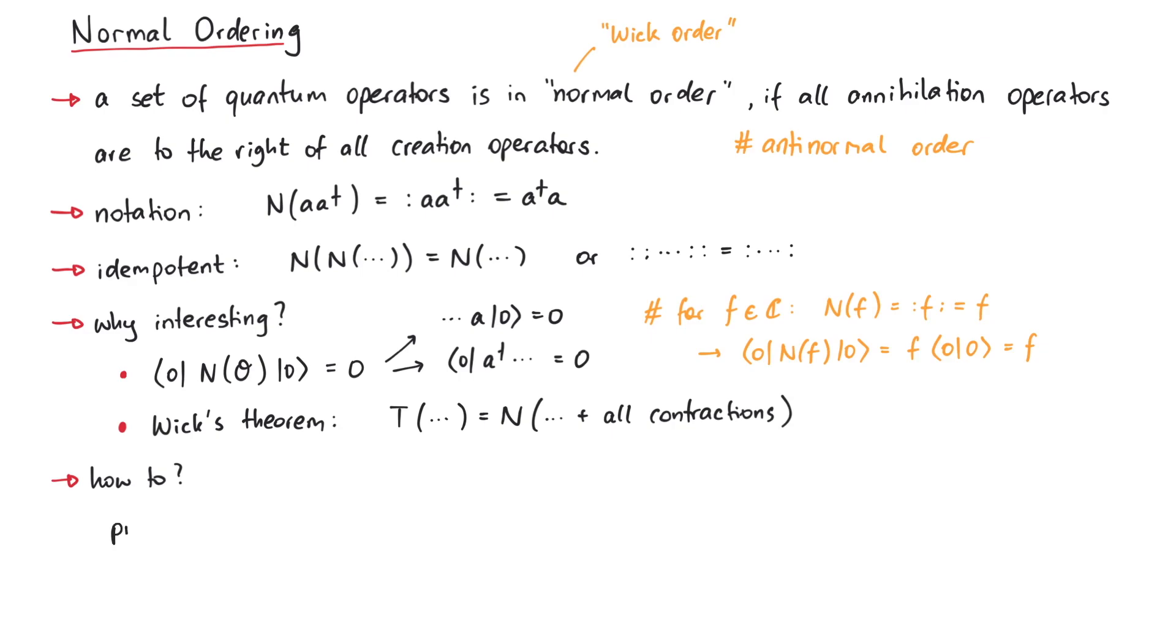This is actually very simple. We pretend that all anti-commutators are zero and switch the operators around until all a's are on the right and all a-daggers are on the left. To see this in action, let us look at bosons and fermions separately.